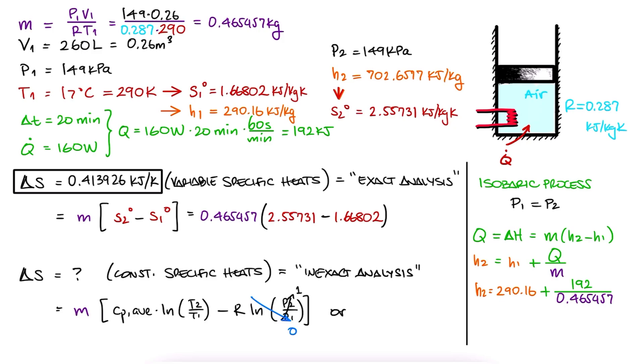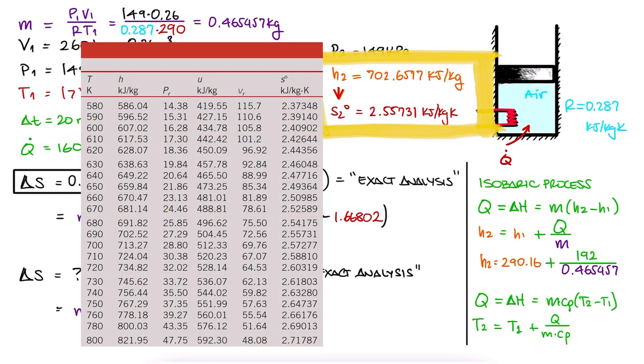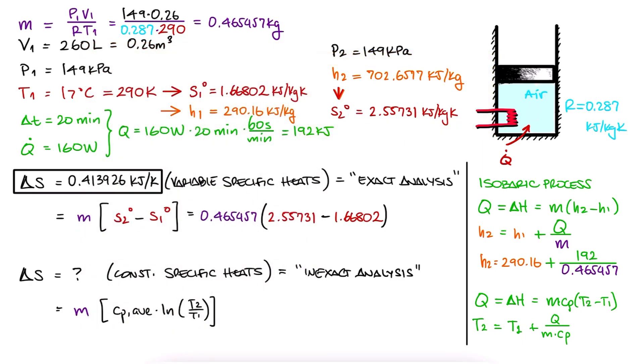For the inexact approach, we can write the change in enthalpy as Cp times the change in temperature. In this case, we are solving for T2, and the Cp value we use would have to be an estimate. Of course, we just solved this problem using the exact approach, so we know what the final temperature is, but T2 is exactly what we're trying to find here, so we would probably go with a Cp at 300 Kelvin as an approximation.